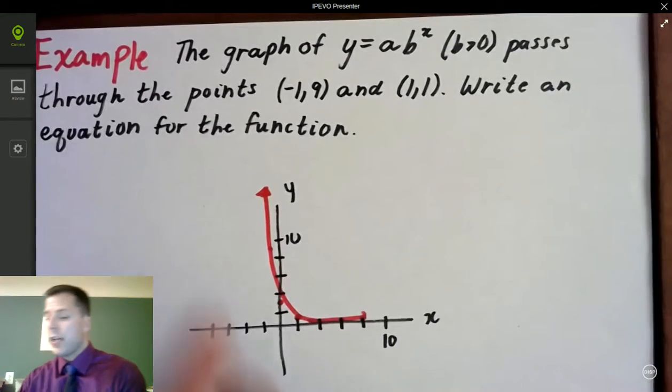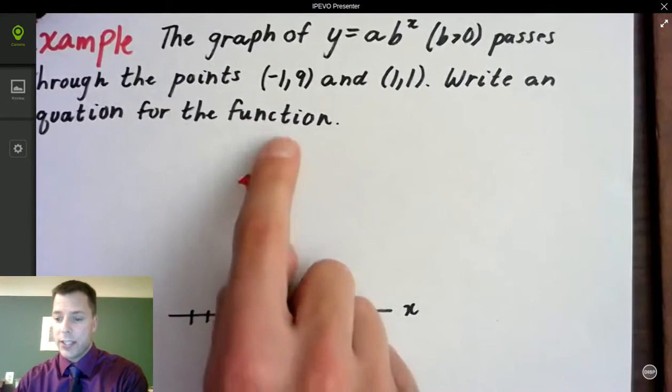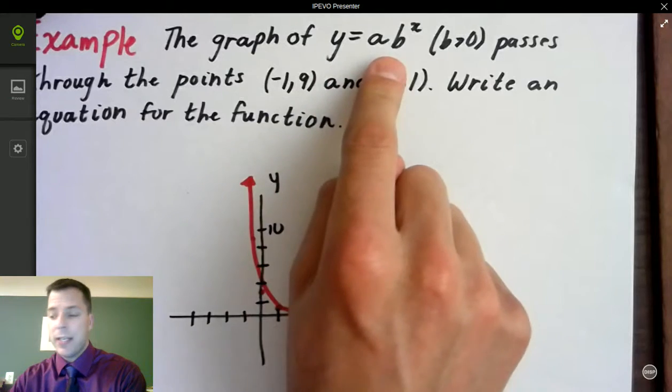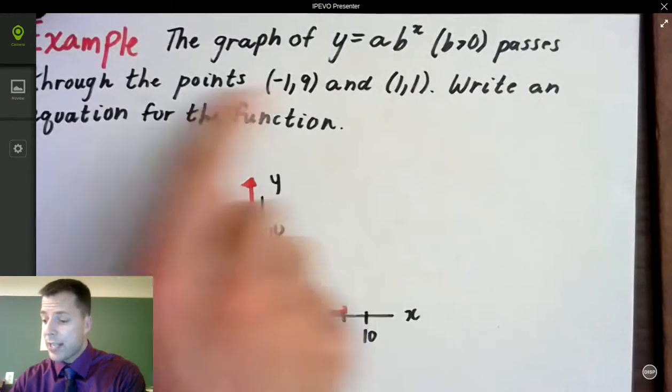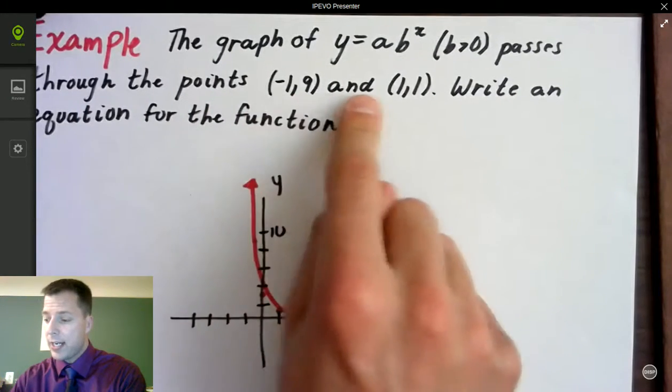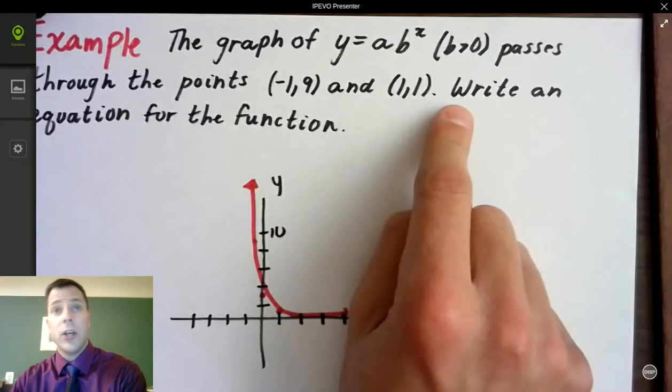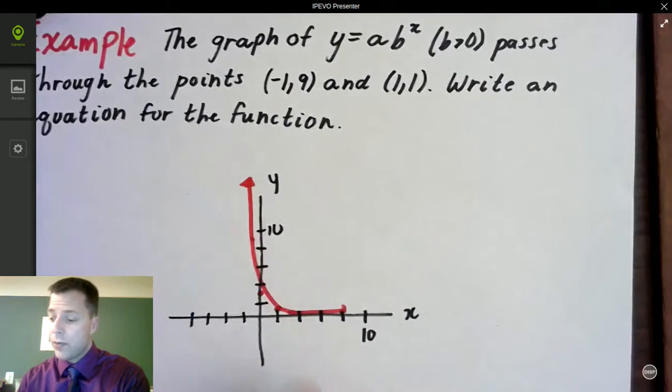So, I've gone ahead and drawn our function. It says the graph of y equals a b to the x, where b is greater than 0, passes through the points negative 1, 9, and 1, comma 1. Write an equation for the function.